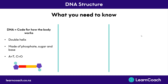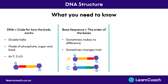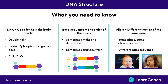So what do you need to know from this video? Well, you need to know that DNA is code for how the body works. It's structured in a double helix, and there are sections of DNA which are made up of phosphates, sugars, and bases. We need to remember we get our double helix because the A's pair with T's and the C's pair with G's, while the phosphate and sugar form the backbone. We need to know that cells can read the order of these bases, and by reading this four-letter code, the cell can get instructions on what protein to make. Changing the base sequence sometimes makes absolutely no difference, but sometimes it can give you a different version of the same trait, and we call this an allele. An allele is a different version of the same gene, still on the same place on the same chromosome.